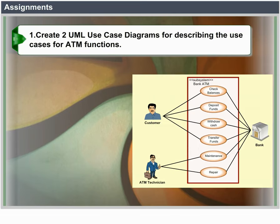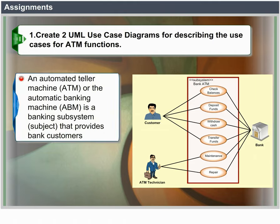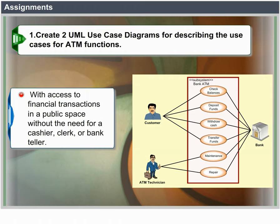Assignments. First, create two UML use case diagrams for describing the use cases for ATM functions. An automated teller machine, ATM, or the automatic banking machine, ABM, is a banking subsystem that provides bank customers with access to financial transactions in a public space without the need for a cashier or bank teller.